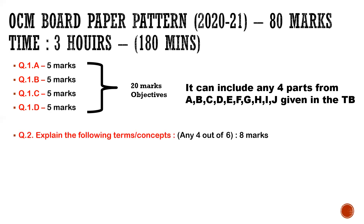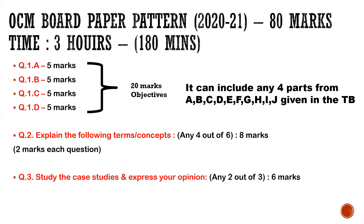The objectives are of 20 marks, which you must not leave at all. Coming to question number two — 'Explain the following terms or concepts' — you will be writing any four out of six for eight marks, meaning one question is of two marks. Please don't write big paragraphs. Write point-wise, minimum two points, maximum four points. Be exact and to the point — don't repeat the same thing in different ways.